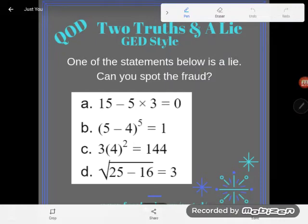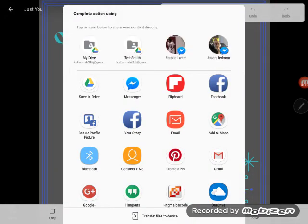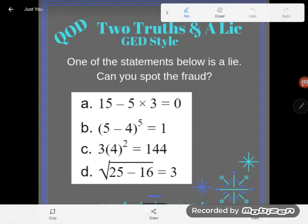Hey GED students, it's GED question of the day and I'm still looking for the lie. So it says one of the statements below is a lie. Can you spot the fraud? Now you can see that these problems I have going on today, these equations here, involve some order of operations. What we think of usually as order of operations problems. What do I mean by that? I just mean that there's more than one operation going on.